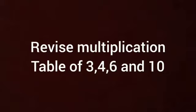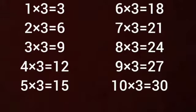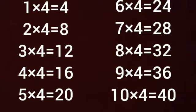Revise multiplication table of 3, 4, 6 and 10. 1×3 is 3, 2×3s are 6, 3×3s are 9, 4×3s are 12, 5×3s are 15, 6×3s are 18, 7×3s are 21, 8×3s are 24, 9×3s are 27, 10×3s are 30.